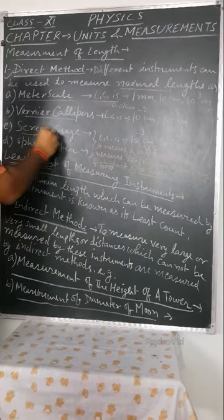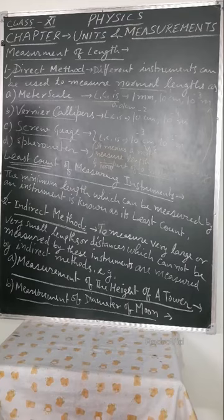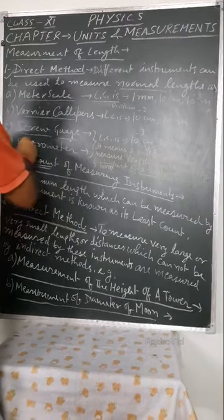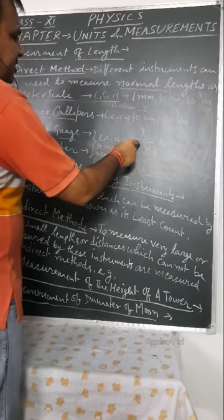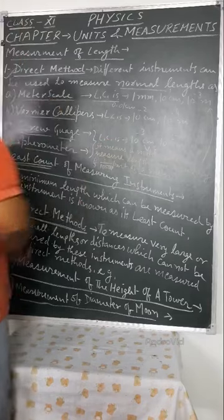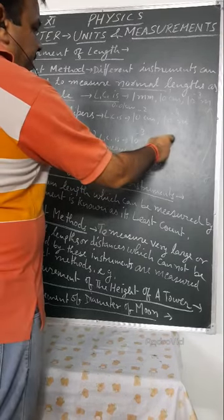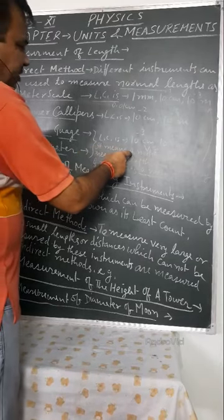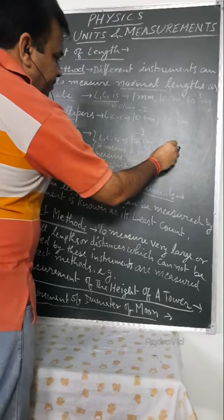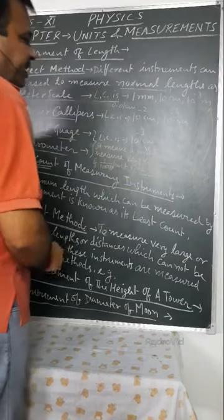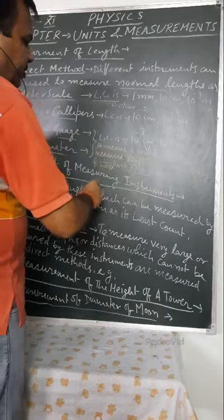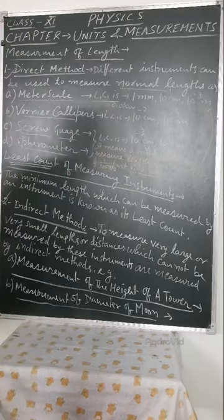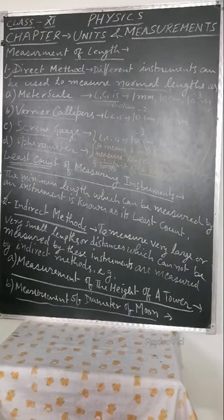Third one, screw gauge. It is also a very important device for practical. Its least count is 10 to the power minus 3 cm or in meter 10 to the power minus 5 meter. It means a screw gauge can measure length up to accuracy of 1 upon 100,000 parts of a meter.